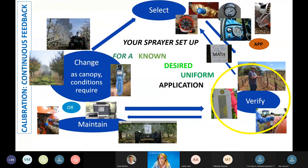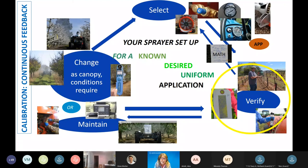We verify all our parameters — double-checking speed, flow rate, and using water sensitive paper to verify coverage. We go back and forth a few times until it's dialed in. That's actually where you can save money: if you approach calibration not assuming round numbers like 100 or 200 gallons, but instead verify and dial it in more closely to what you actually need, you can improve your return on investment.